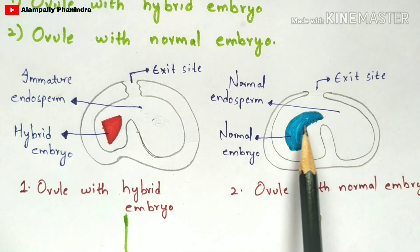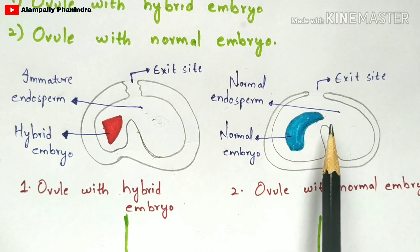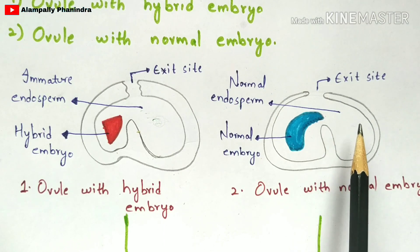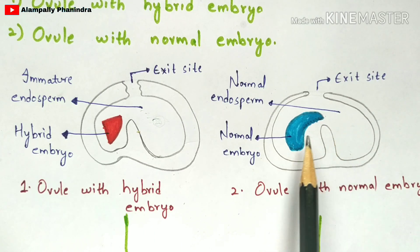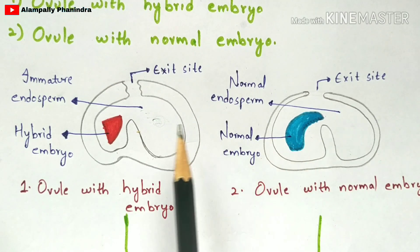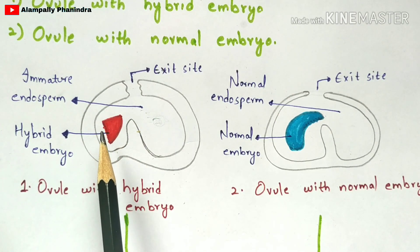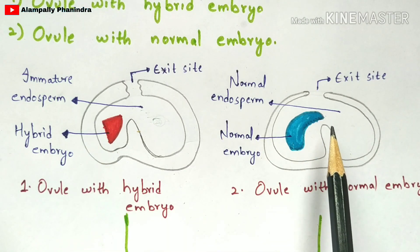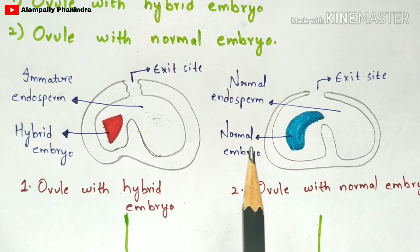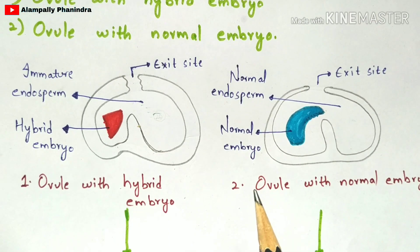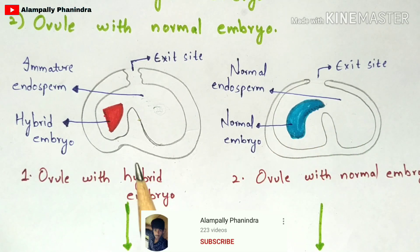The immature endosperm provides no nutrition for the hybrid embryo to develop into a complete plant. In the second case — ovule with normal embryo — a normal endosperm is present, which has nutrition availability. This normal endosperm provides nutrition to the normal embryo, giving it the capability to develop into a complete plant. So the immature endosperm cannot support the hybrid embryo's development.